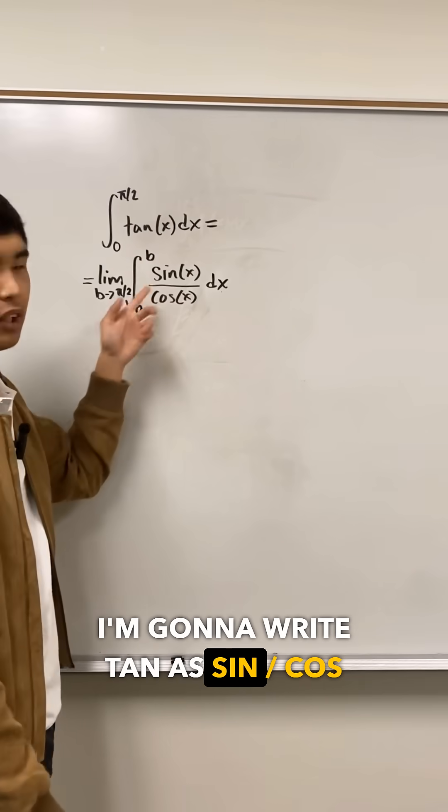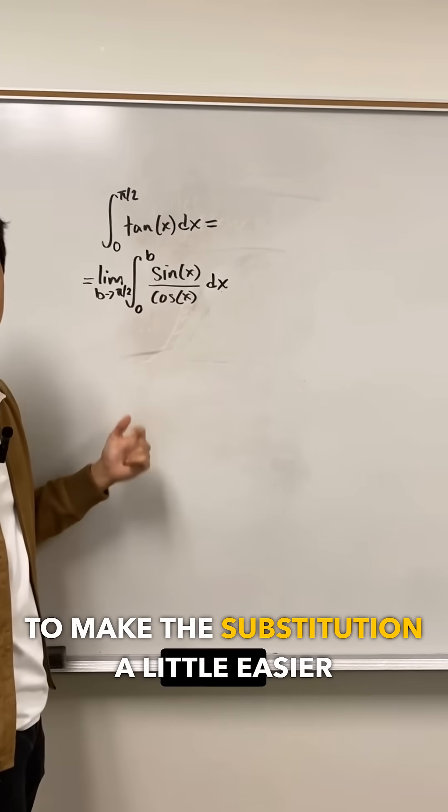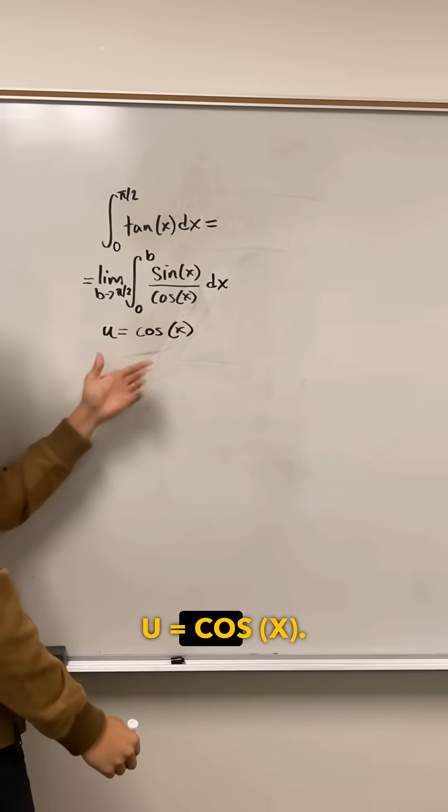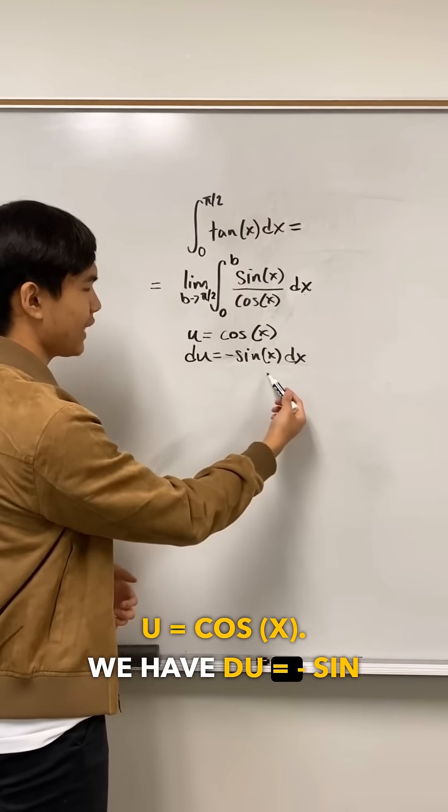I'm going to write tangent as sine over cosine to make the substitution a little easier to see. We're going to have u equal to cosine x. So we have du equals negative sine x dx.